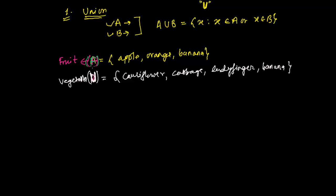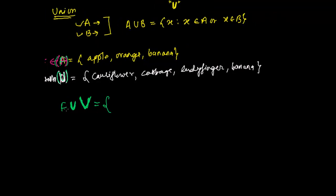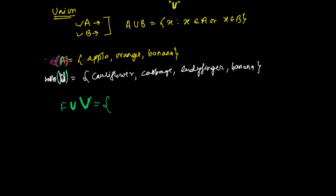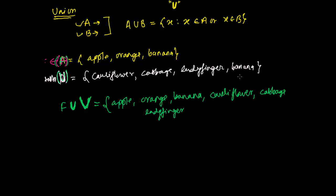So if I am saying what is F union V — F representing fruits and V representing vegetables — F union V represents those elements which are found in F or V or both. It means we write every element of both sets without repeating. So F union V = {apple, orange, banana, cauliflower, cabbage, ladyfinger}. Banana appears in both sets but we write it only once — we don't repeat elements.